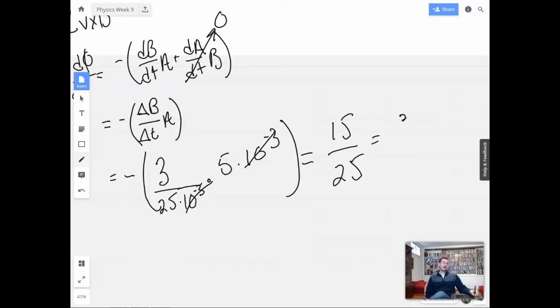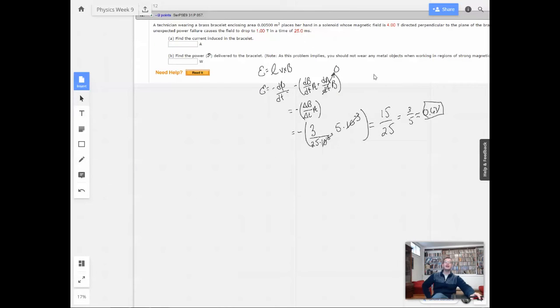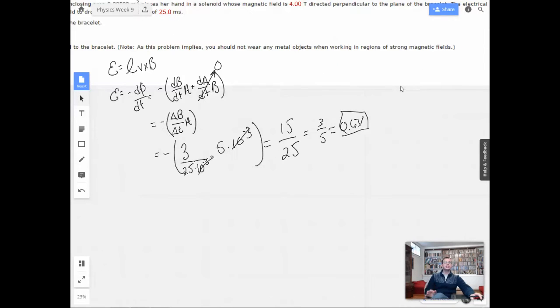If we divide both sides by five, we have three-fifths, which is like 0.6 volts. That's pretty good. Nice. Go math. All right, so now we have our 0.6 volts. We need to change that to a current.